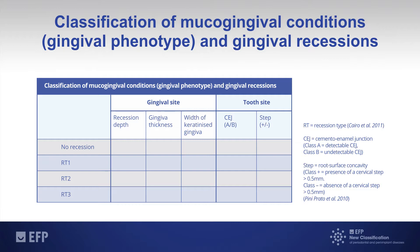Coming back to the root surface condition — the tooth side step, plus or minus — this refers to a classification developed by Pino Prato and co-authors in 2010. Plus means we do have a cervical step: a root surface concavity greater than 0.5 mm. The absence, indicated by minus, means there is a cervical step less than or equal to 0.5 mm.